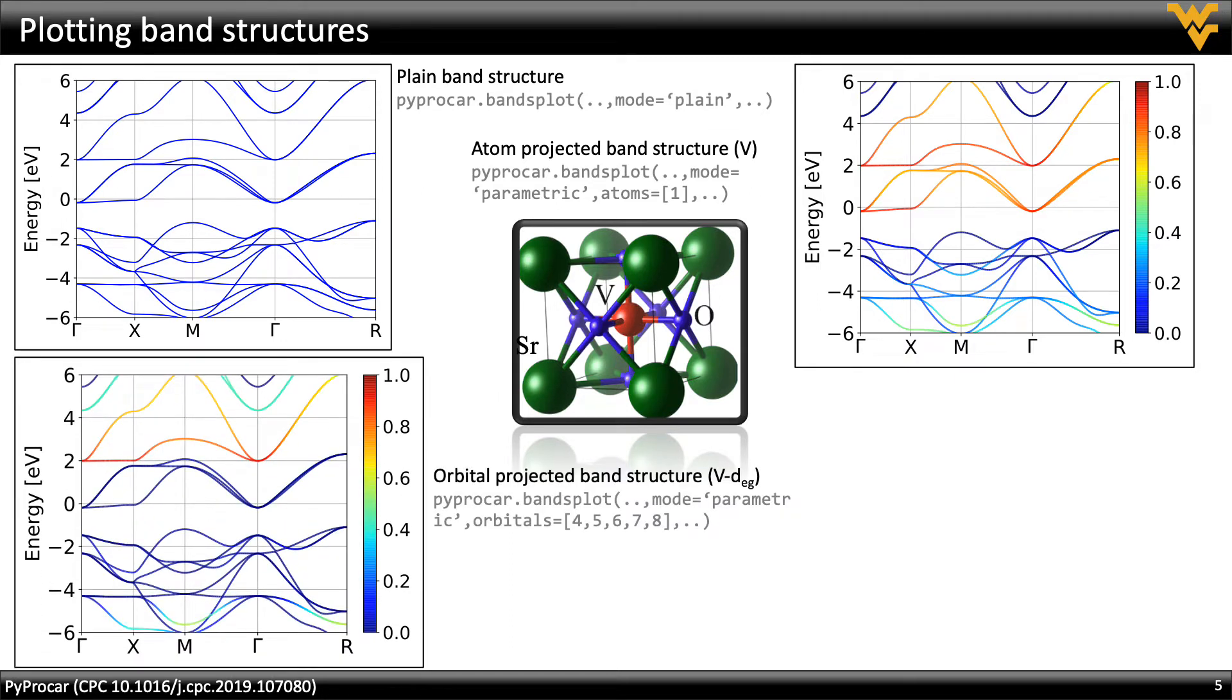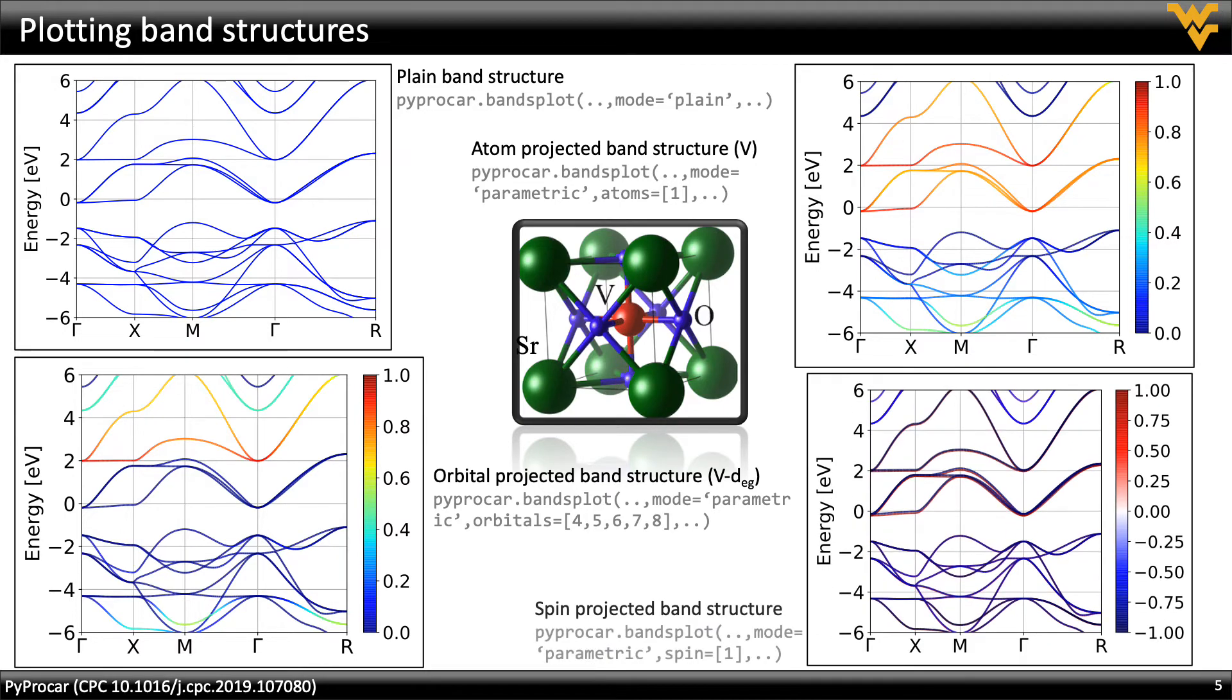The orbital projected band structure projects the orbital contribution from a selected orbital or a list of orbitals onto the band structure. This is the mode that I personally use the most to select the one-year energy window for correlated orbitals to use in dynamical mean field theory calculations. Finally, we have the spin projected band structure which displays the spin contributions to bands.